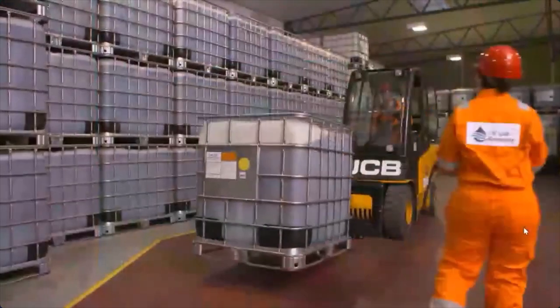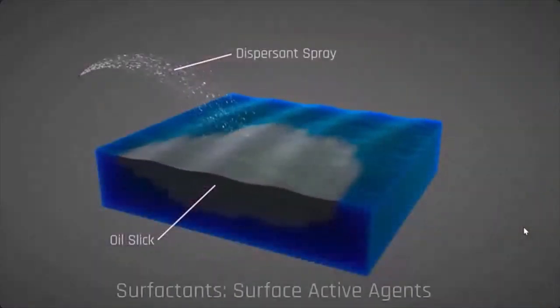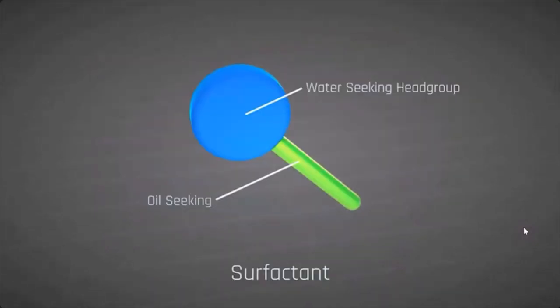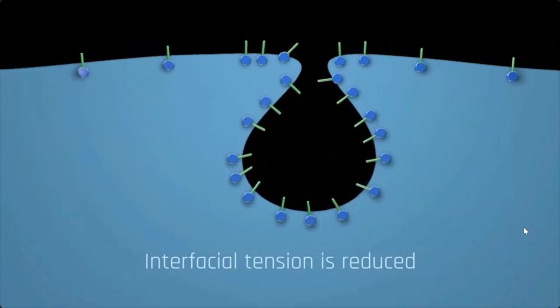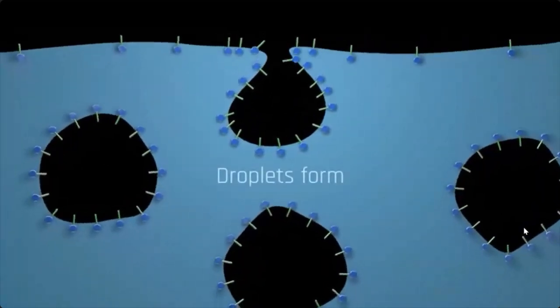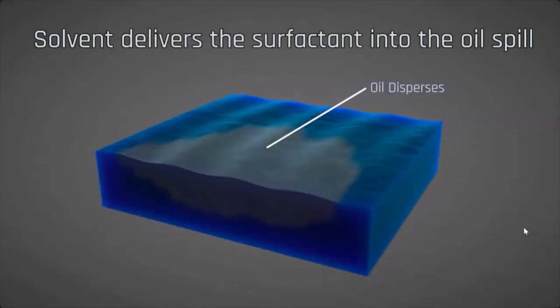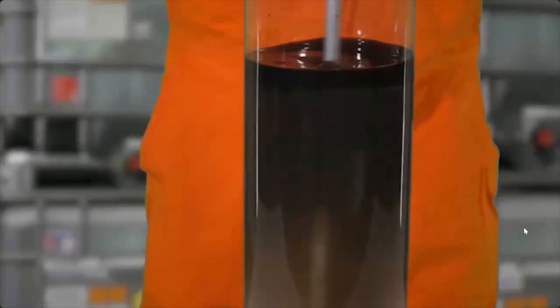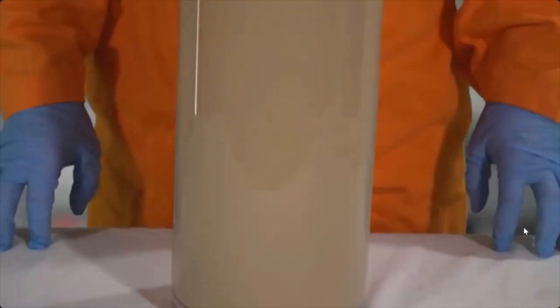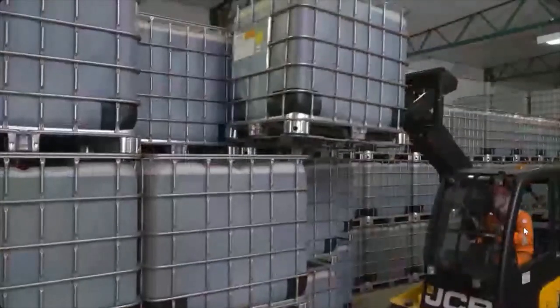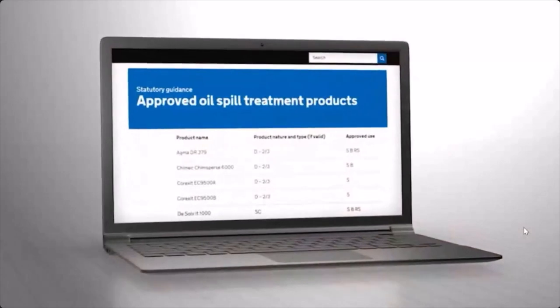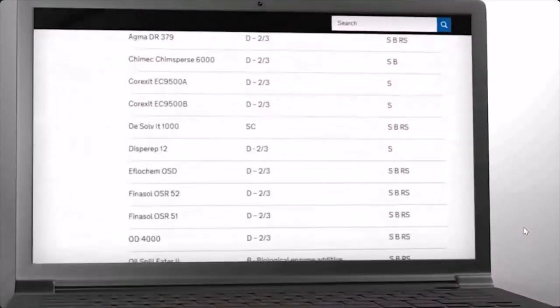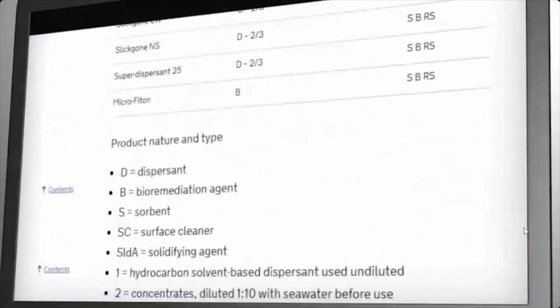Dispersants have two main components: a surfactant and a solvent. Surfactants are surface-active agents — part of each surfactant molecule is attracted to oil while another part is attracted to water. Once attached to each element, the surfactant reduces interfacial tension, literally pulling the oil and water apart. The solvent transports and distributes the surfactants into the oil; the better the solvent's penetration, the more efficient the dispersant. Dispersants share some ingredients with everyday products such as toothpaste, sunscreen and cosmetics, but are designed to work in the marine environment and prevent oil from re-coalescing. Before approval for use, a dispersant is tested for both efficacy and toxicity and added to an approved list for the country of application.